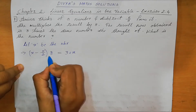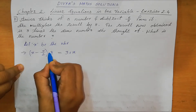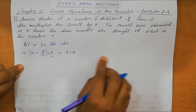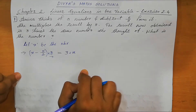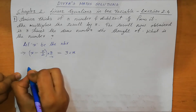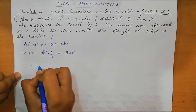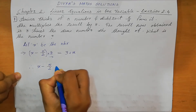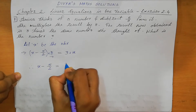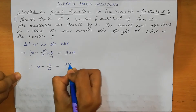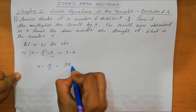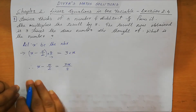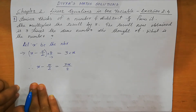This 8 — if you are moving 8 to the right-hand side, multiplication becomes division. So from here we can write: X minus 5 by 2 equal to 3X divided by 8.